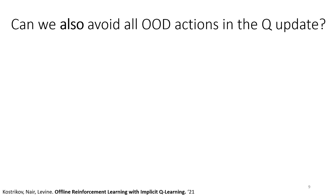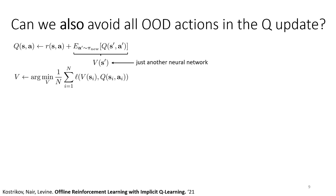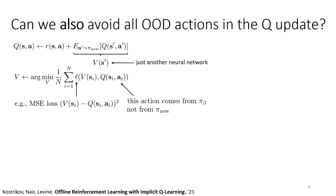Can we somehow avoid all out-of-distribution action queries when computing target values? Here's the target value computation: we could train a value network V by regressing V(s_i) onto Q(s_i, a_i) using mean squared error over all sampled state-action tuples in the dataset. But this won't really work because a_i in the dataset comes from pi_beta, not pi_nu — so you're actually estimating the value of the behavior policy, not of your latest policy.